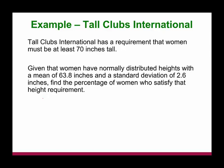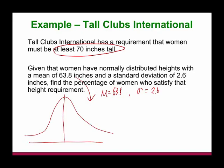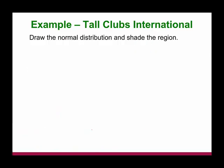Let's take a look at an example: Tall Clubs International. Tall Clubs International has a requirement that women must be at least 70 inches tall. Given that women have normally distributed heights with a mean of mu equals 63.8 inches and population standard deviation of 2.6 inches, find the percentage of women who satisfy the height requirement. Draw the bell curve — the mean goes in the middle, mu equals 63.8. The x-value x must be greater than or equal to 70 inches, which falls on the right-hand side of 63.8. So we are looking for the area to the right, because 'at least' indicates we're looking for the area to the right.